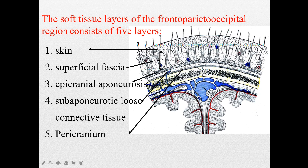The pericranium is the outer membrane of this bone. Remember these three types of hematomas. If the hematoma happens in the superficial fascia, it is a subcutaneous hematoma. If it happens in the sub-aponeurotic space, it can be a large-scale hematoma — this is called a subgaleal hematoma. If it happens under the pericranium, it is a subperiosteal hematoma.